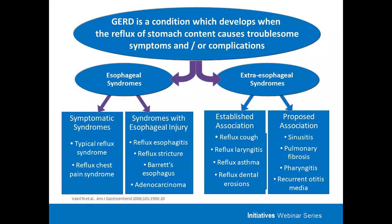There are also extra-esophageal syndromes associated with GERD. Some are well-established, such as reflux cough and reflux laryngitis, while others have a more proposed association, including sinusitis and pulmonary fibrosis. For these extra-esophageal syndromes, the burden to obtain an objective diagnosis is higher, given the number of alternate diagnoses that can be at play. This is where objective testing becomes even more important in establishing the relationship of GERD with these syndromes.